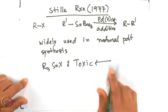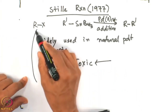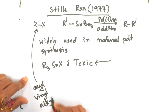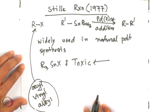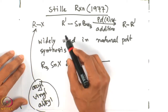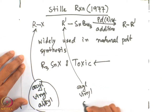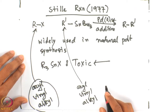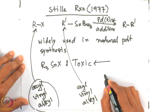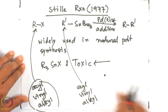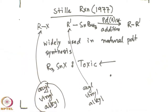Although this is problematic, R-X could be aryl, vinyl, or alkyl — all different variations work well with this reaction. And R' on the tin side can once again be aryl, vinyl, or alkyl. That is quite interesting. Also, this reaction is air and moisture stable — the tin reagents particularly are air and moisture stable.